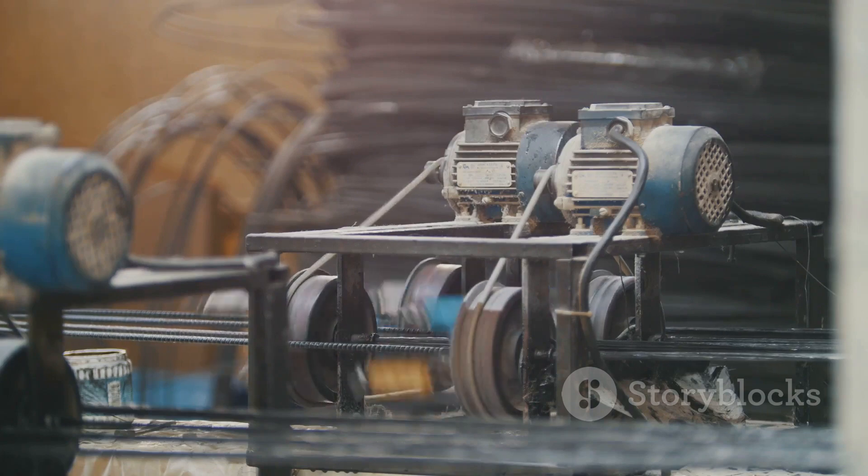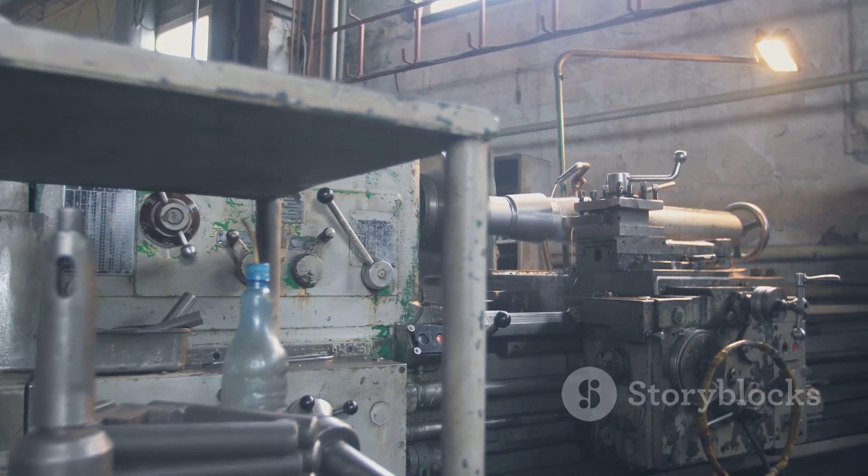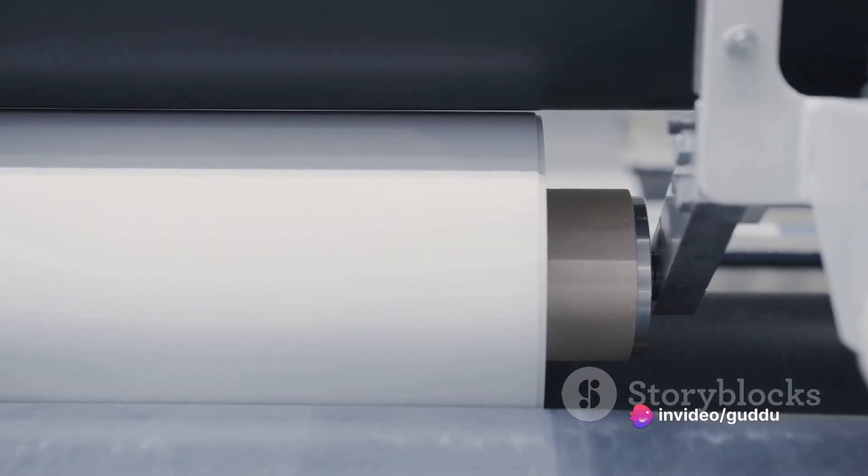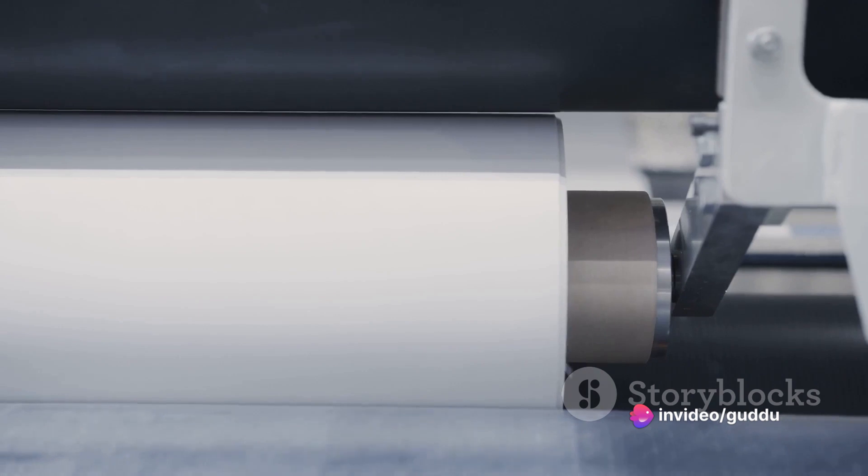Rolling and sliding contact bearings reduce friction between machine parts. The design of these bearings must account for load capacity, speed, lubrication, and temperature to ensure smooth and efficient operation.